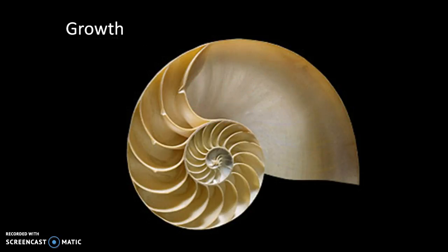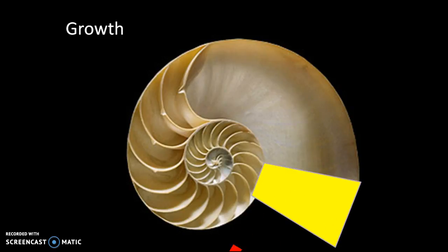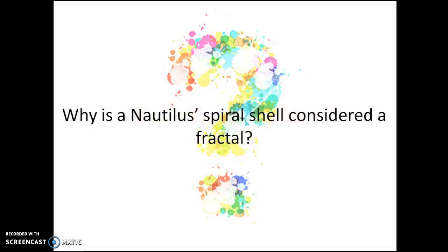As the Nautilus continues to grow, it builds more shell at the entrance, then forms another chamber wall behind it. This is important because this is how the shell grows in a fractal pattern. So, why is the Nautilus shell considered a fractal? Let's review what a fractal is first.